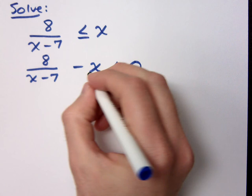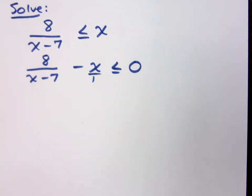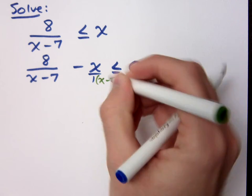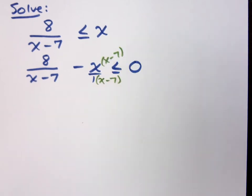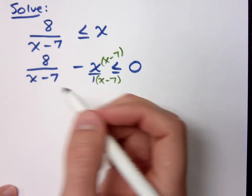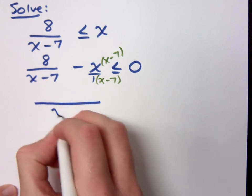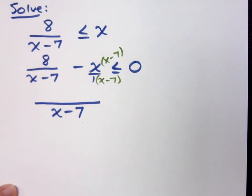But now I have to get a common denominator. Remember that x is over 1, so what's my common denominator? It's x minus 7. So, looks like we're having another one of those days. So, my x minus 7 is in the denominator. What's in your numerator?